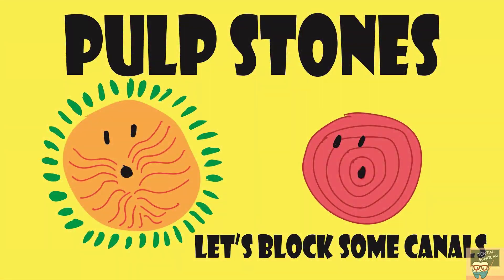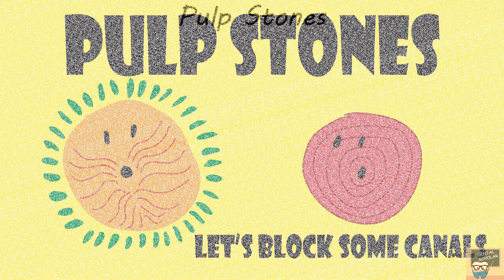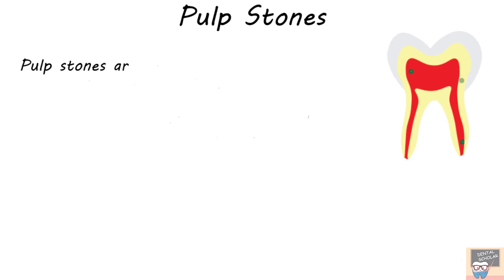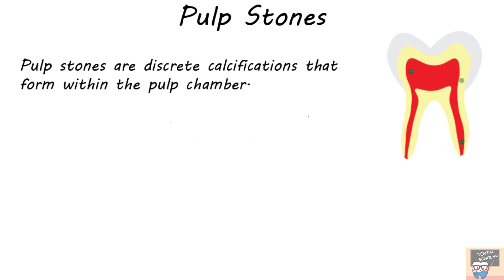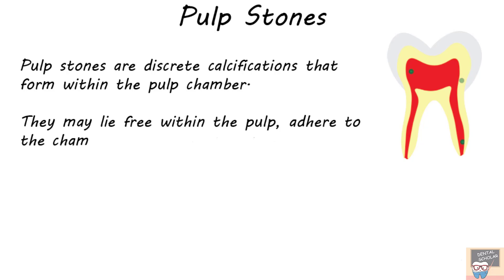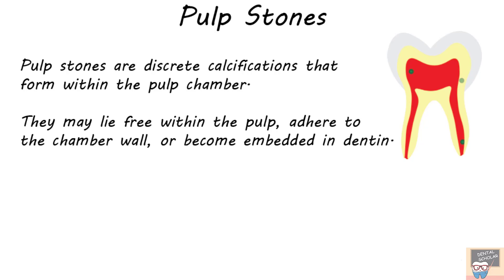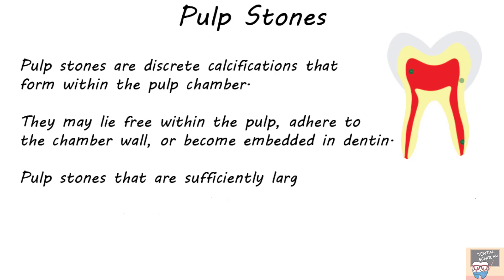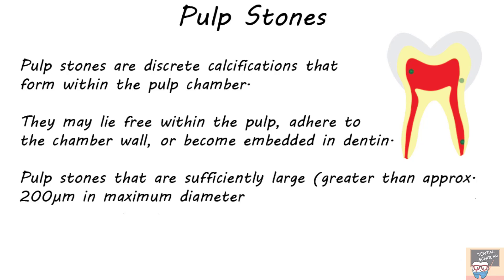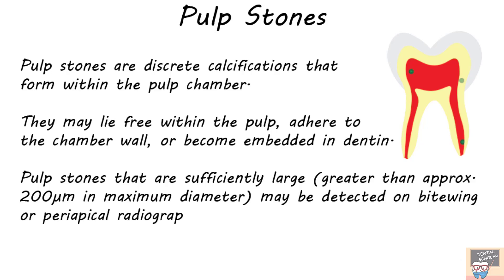Hello everyone. In this video I will tell you about pulp stones. Pulp stones are discrete calcifications that form within the pulp chamber. They may lie free within the pulp, adhere to the chamber wall, or even become embedded in dentine. Pulp stones that are sufficiently large, i.e. greater than approximately 200 microns in maximum diameter, may be detected on bitewing or periapical radiograph.